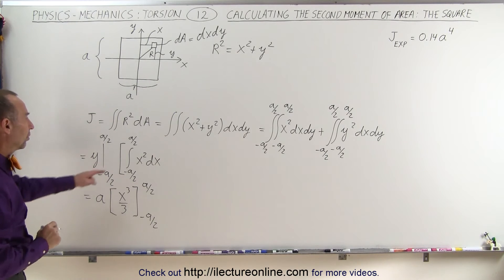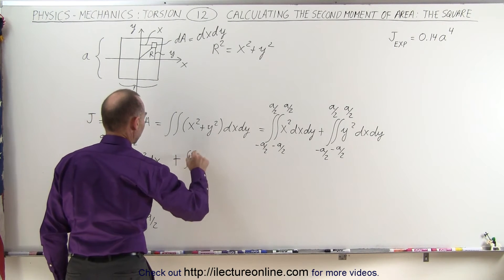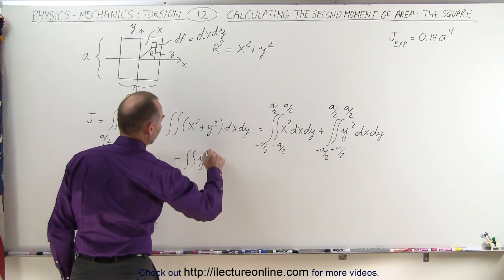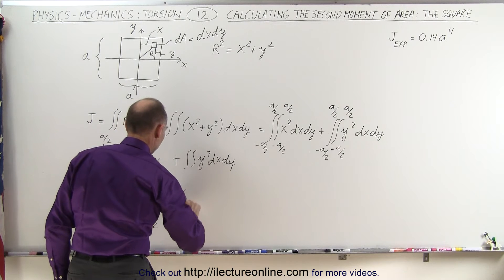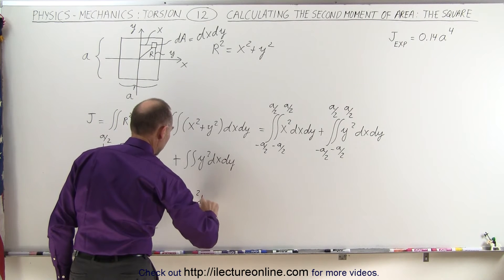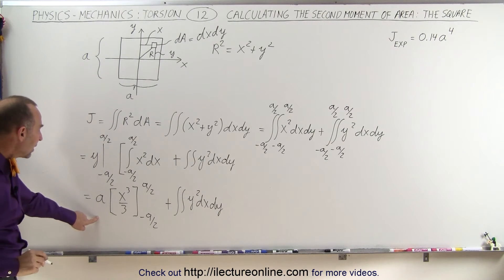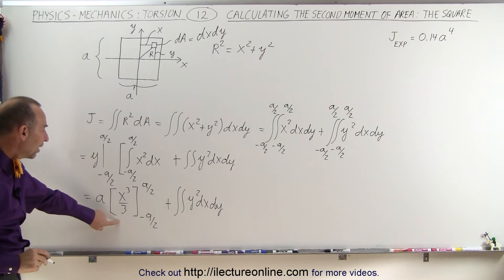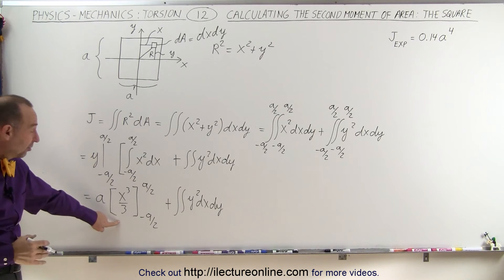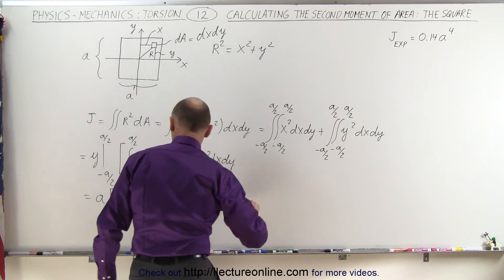And of course, we can't forget the second integral, so that would be plus the second integral of y squared dx dy. Now, when we evaluate this, we get A over 2 cubed, that's A cubed over 8, and then minus negative A over 2 cubed, that would be plus A cubed over 8. And so when you combine all that together, this gives us,